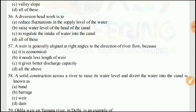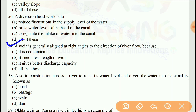Question 56: A diversion head work is used to — the right answer would be D, all of the above. It reduces fluctuation in the supply level of water, raises the water level at the head of the canal, and regulates the intake of water into the canal.